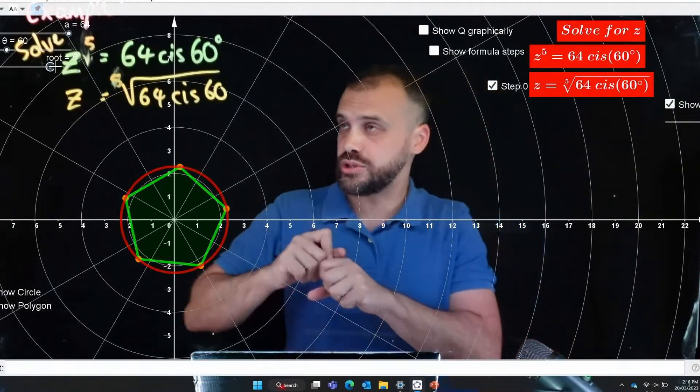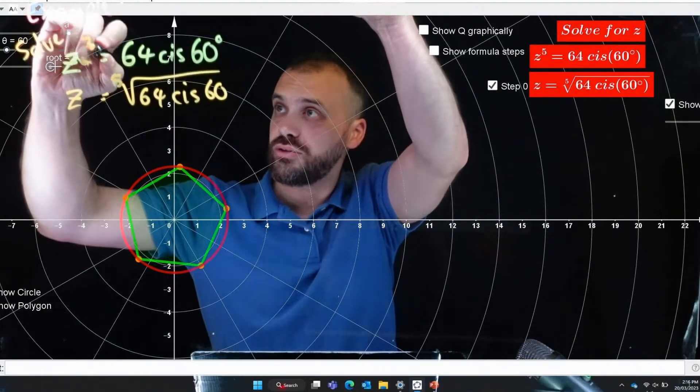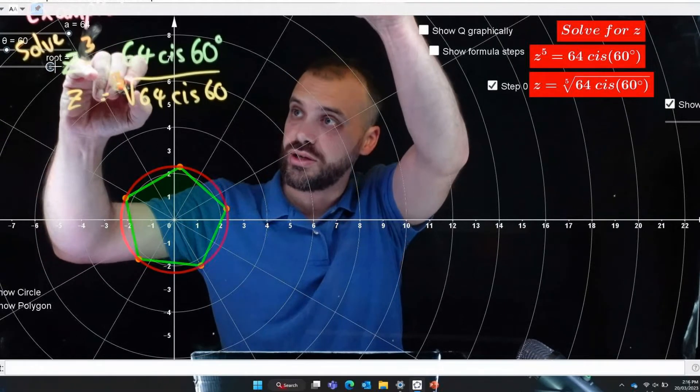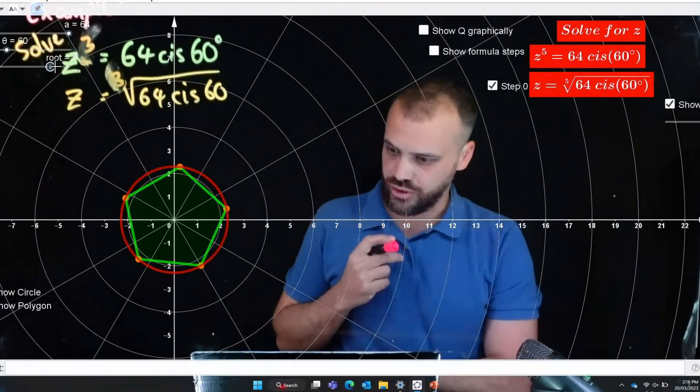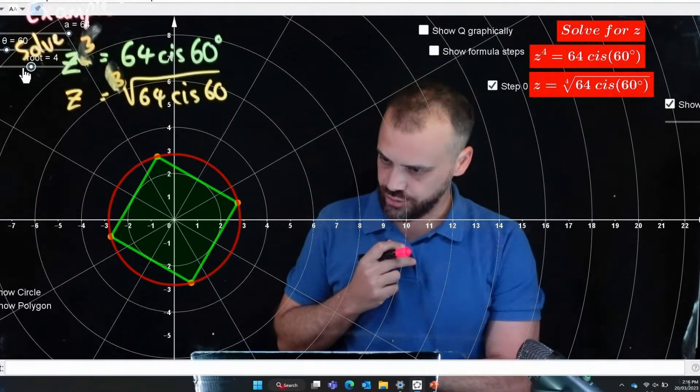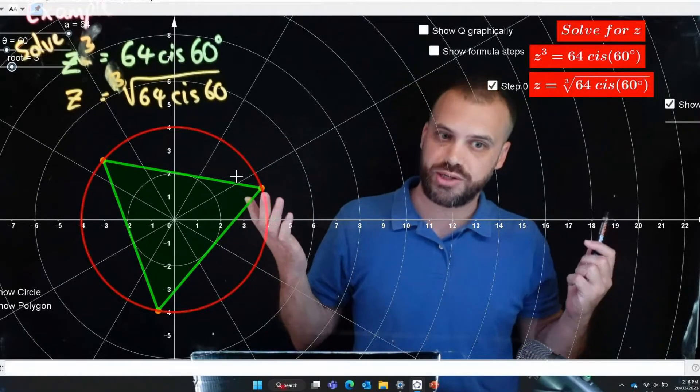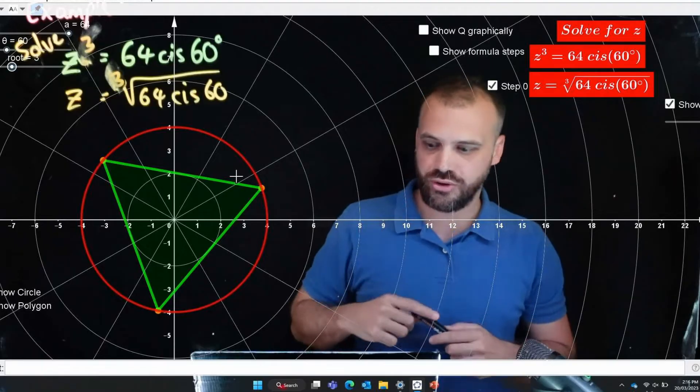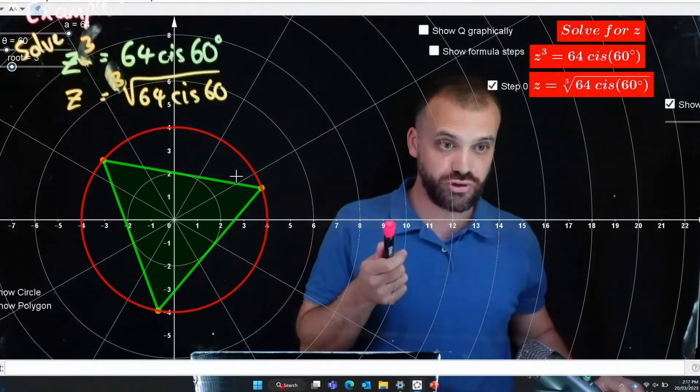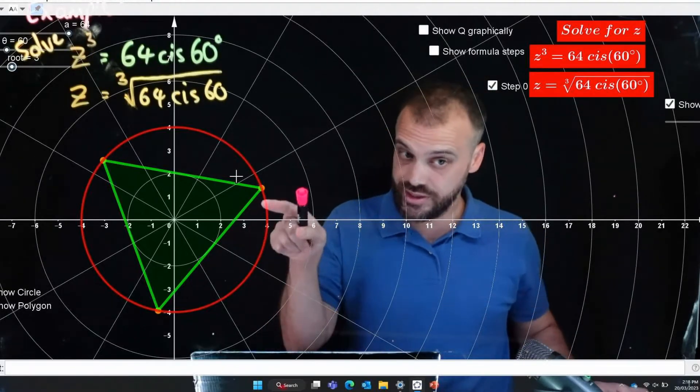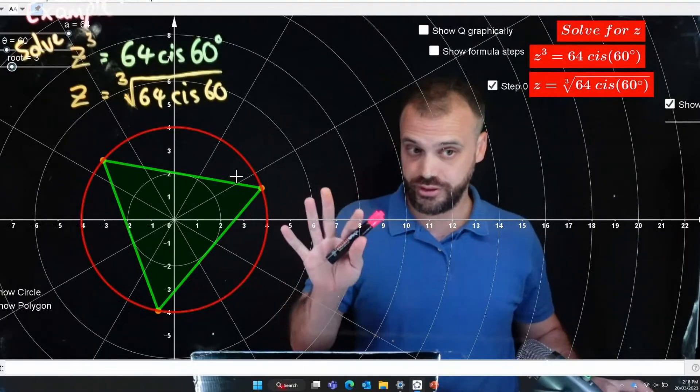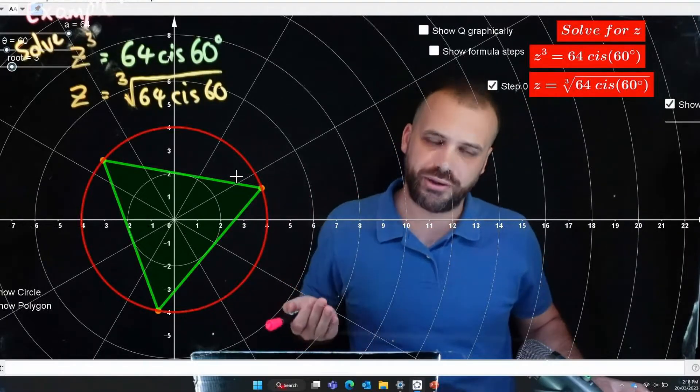If it was z to the three and we're finding the cube root of that, you can see we get three equally spaced solutions around the origin and it creates a triangle. So now that we understand this bit here, let's jump into it a bit more algebraically.